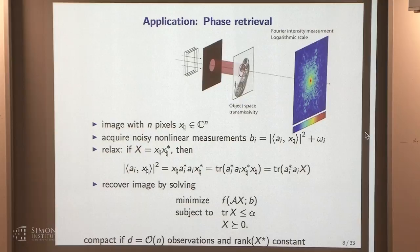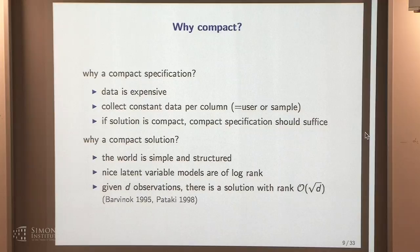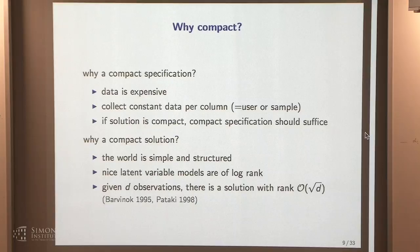Generally, reasons to expect a compact matrix optimization problem: data is expensive, so we collect order n data. If the solution is compact, a compact specification should suffice. The usual justification for compact solutions is 'the world is simple,' but we can say data from a latent variable model is approximately log-rank. Another justification: for any SDP with D constraints, there exists a solution with rank order sqrt(D).